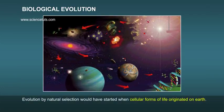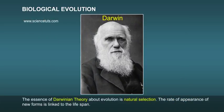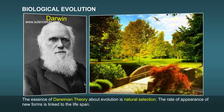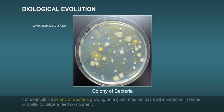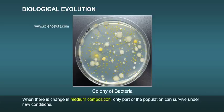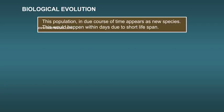Biological evolution by natural selection would have started when cellular forms of life originated on Earth. The essence of Darwinian theory is natural selection. The rate of appearance of new forms is linked to lifespan. For example, a colony of bacteria growing on a given medium has built-in variation in terms of ability to utilize a feed component. When there is a change in medium composition, only part of the population can survive under new conditions, and this population in due course of time appears as a new species.